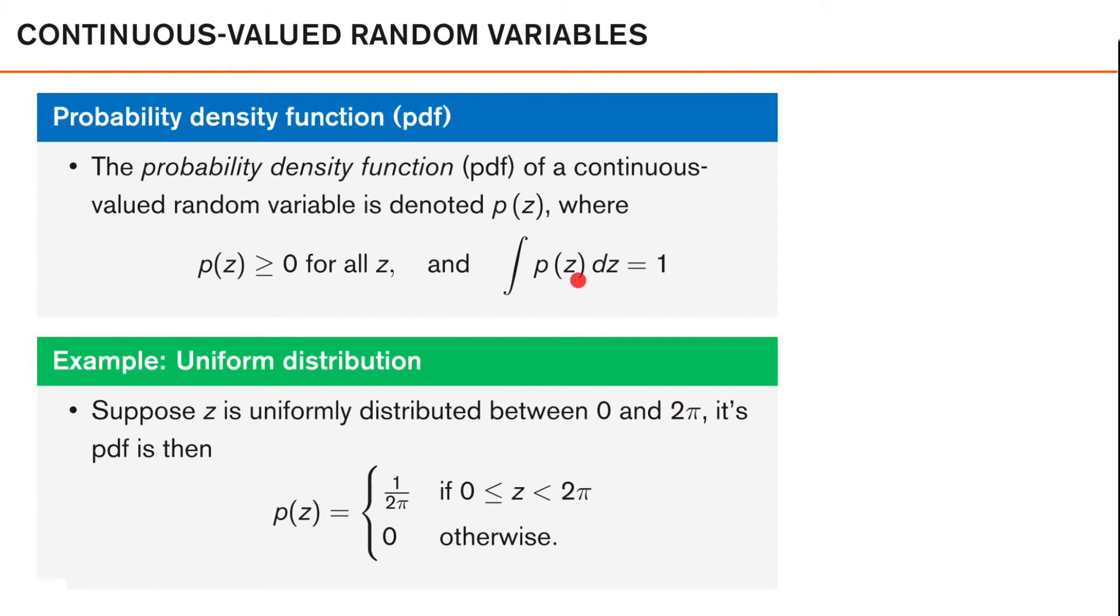Let's look at an example of a continuous valued random variable z, which is uniformly distributed between 0 and 2π. So here, z could for example be a stochastic angle. The PDF of z can then be written like this, where we have 1/(2π) if z is within the interval of 0 to 2π and 0 otherwise. Now we get 1/(2π) here as all angles are equally probable in a uniform distribution, and the size of the interval is 2π.